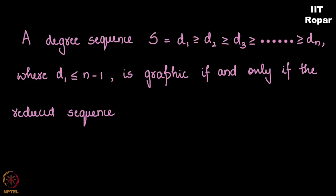Now it is graphic if and only if the reduced sequence S' is D2-1, D3-1 and so on. Why is this the reduced sequence? Each time I modify the previous sequence, we reduce the degree by 1, so this sequence S' is graphic.